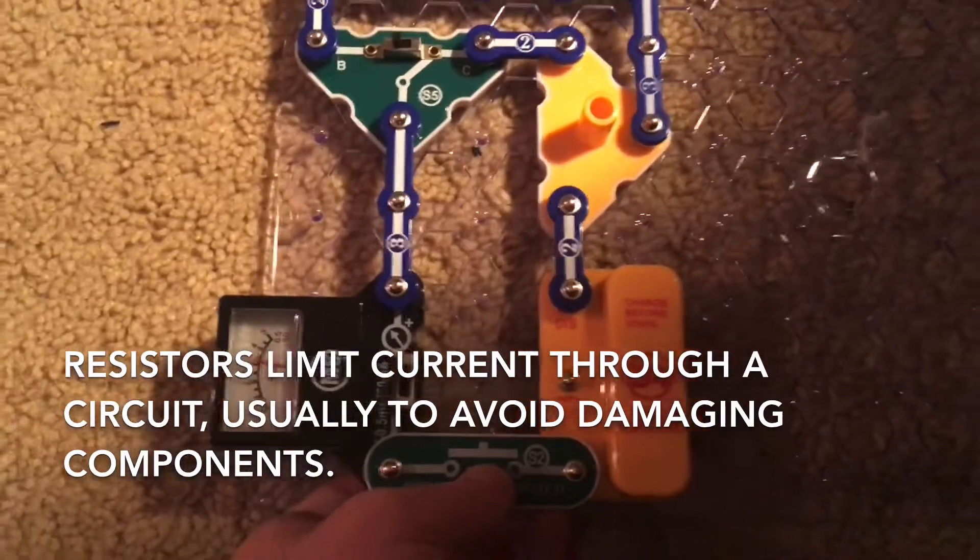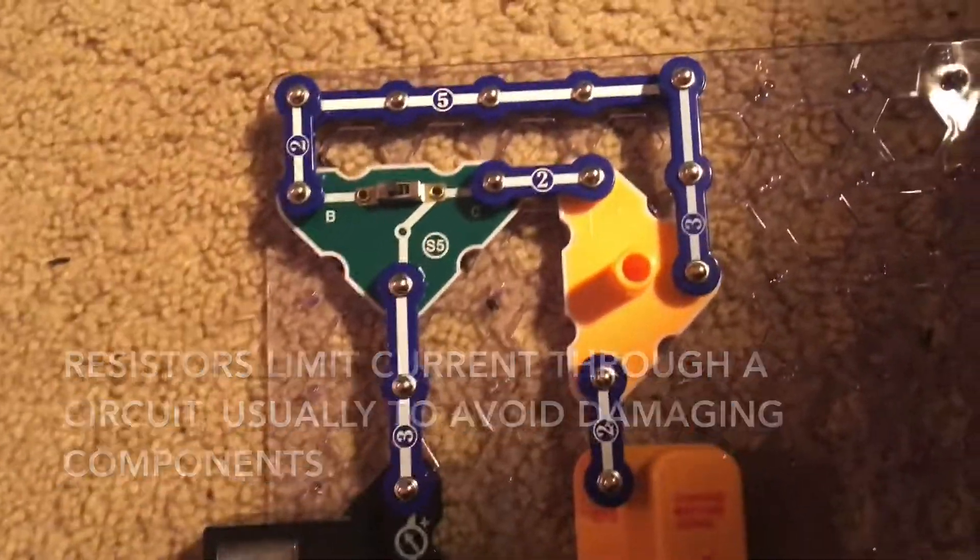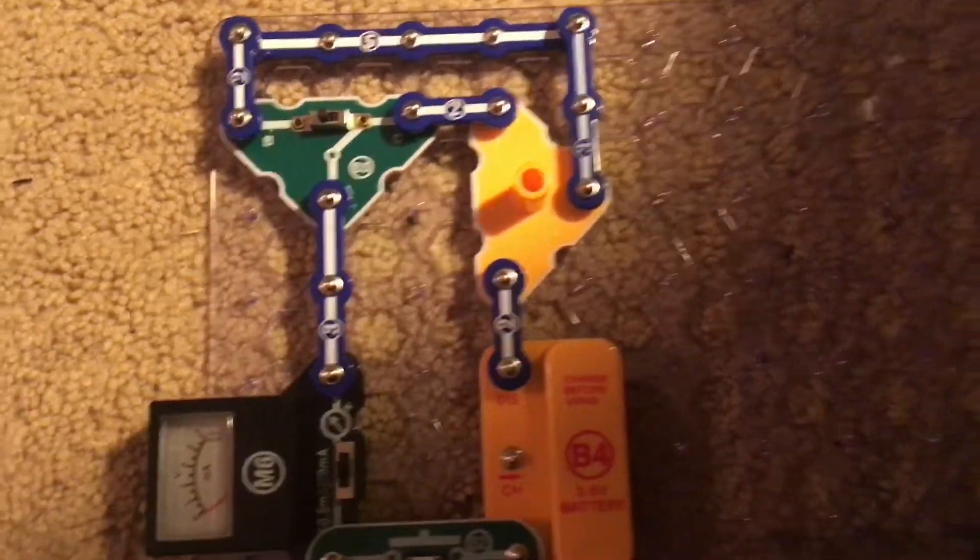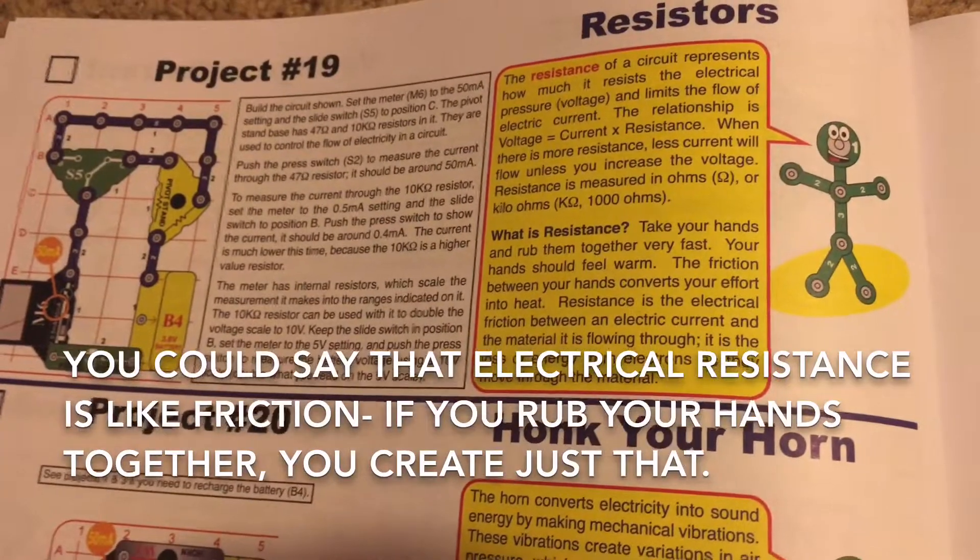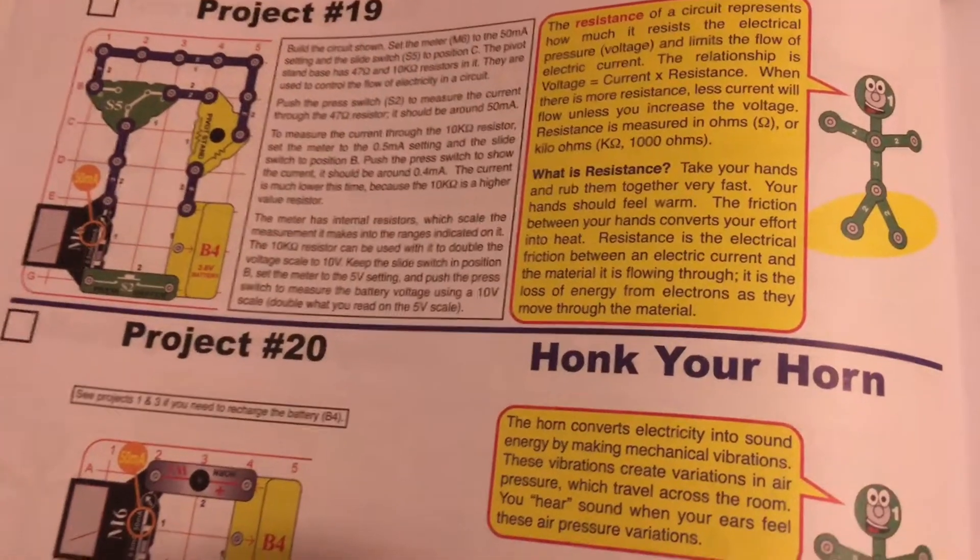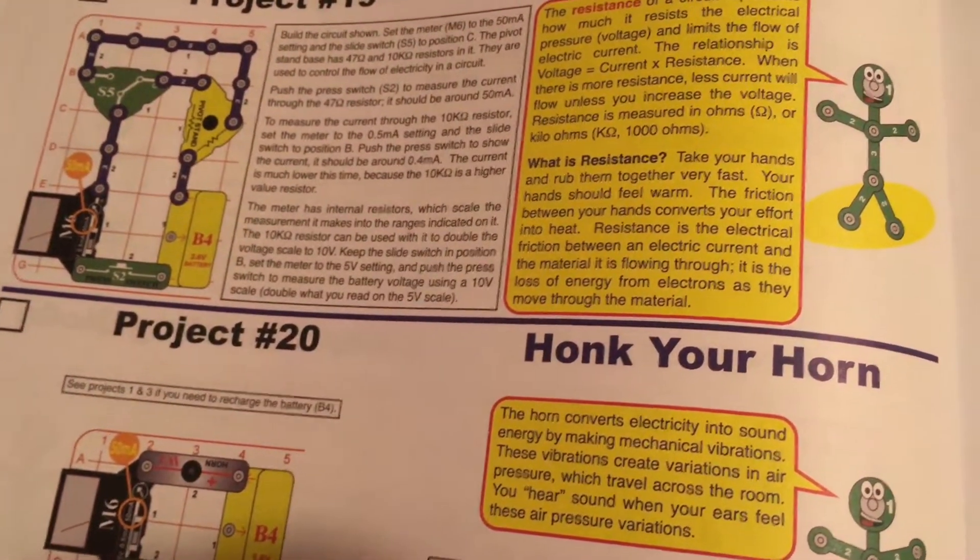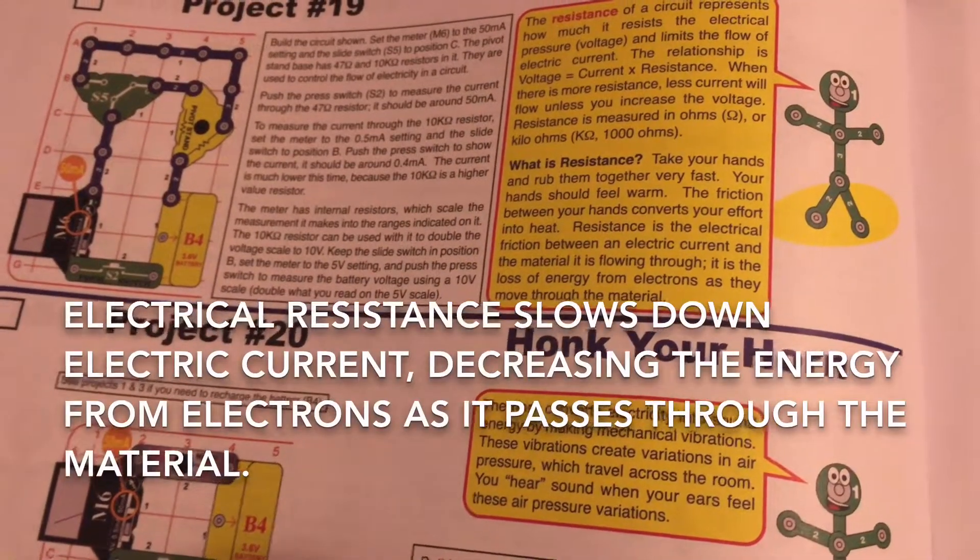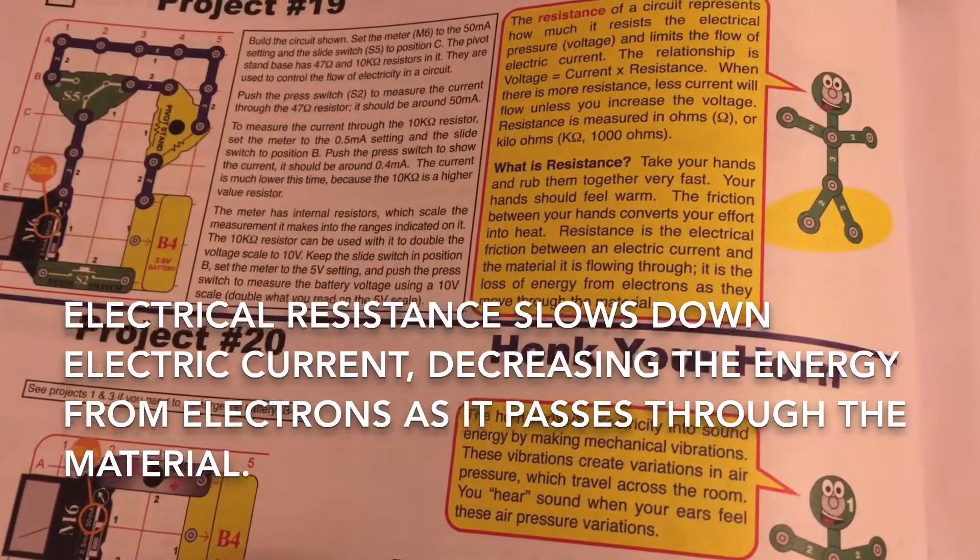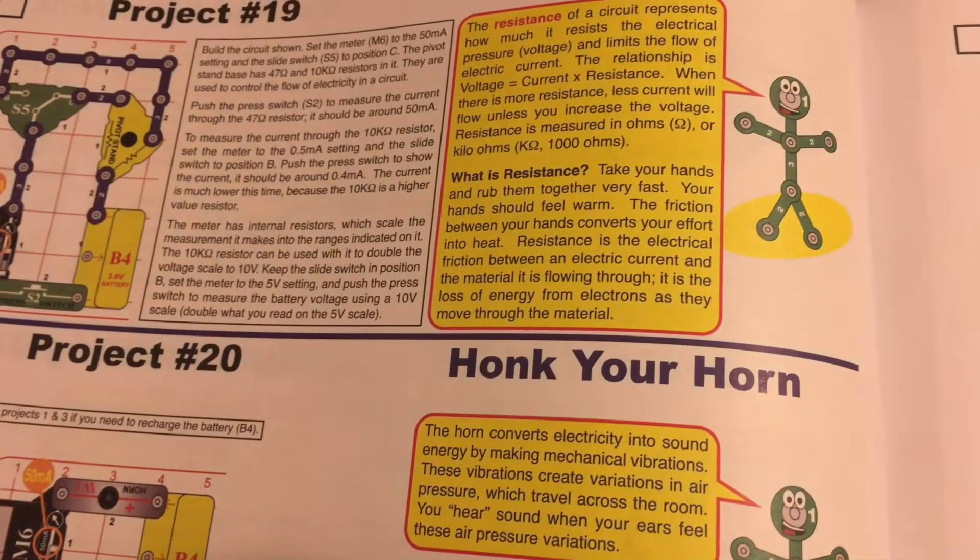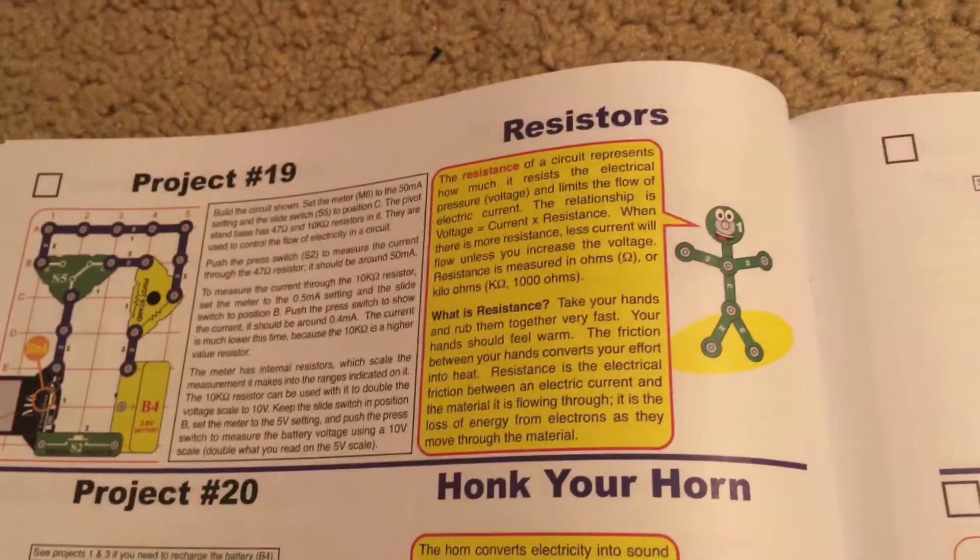A resistor is an electrical device that limits current flowing through a circuit. How does a resistor work? It provides resistance, which is like electrical friction. If you rub your hands together, they will begin to feel warm, and the friction that you create by rubbing your hands is converting the effort into heat. But resistance is the electrical friction, and it's slowing down electric currents, limiting the electric current in the material that's flowing through. It's the loss of energy from electrons as they move through whatever material the current is passing through.